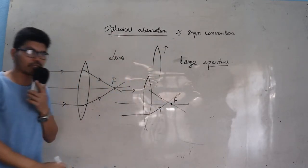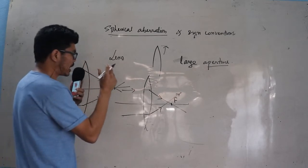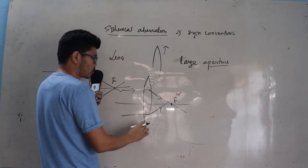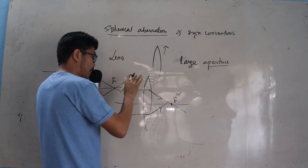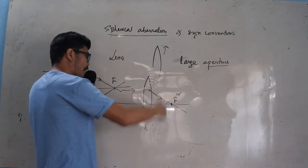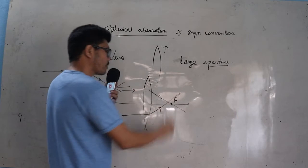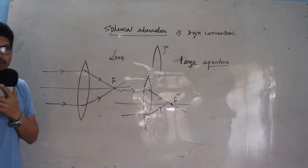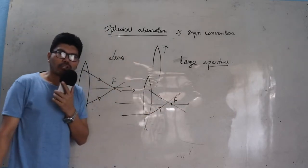The refracted rays are not meeting at the focus. In such a case, the lens is said to have spherical aberration. The meaning of spherical aberration is the inability of the lens to focus, or inability of the lens to make the refracted rays meet at the focus.